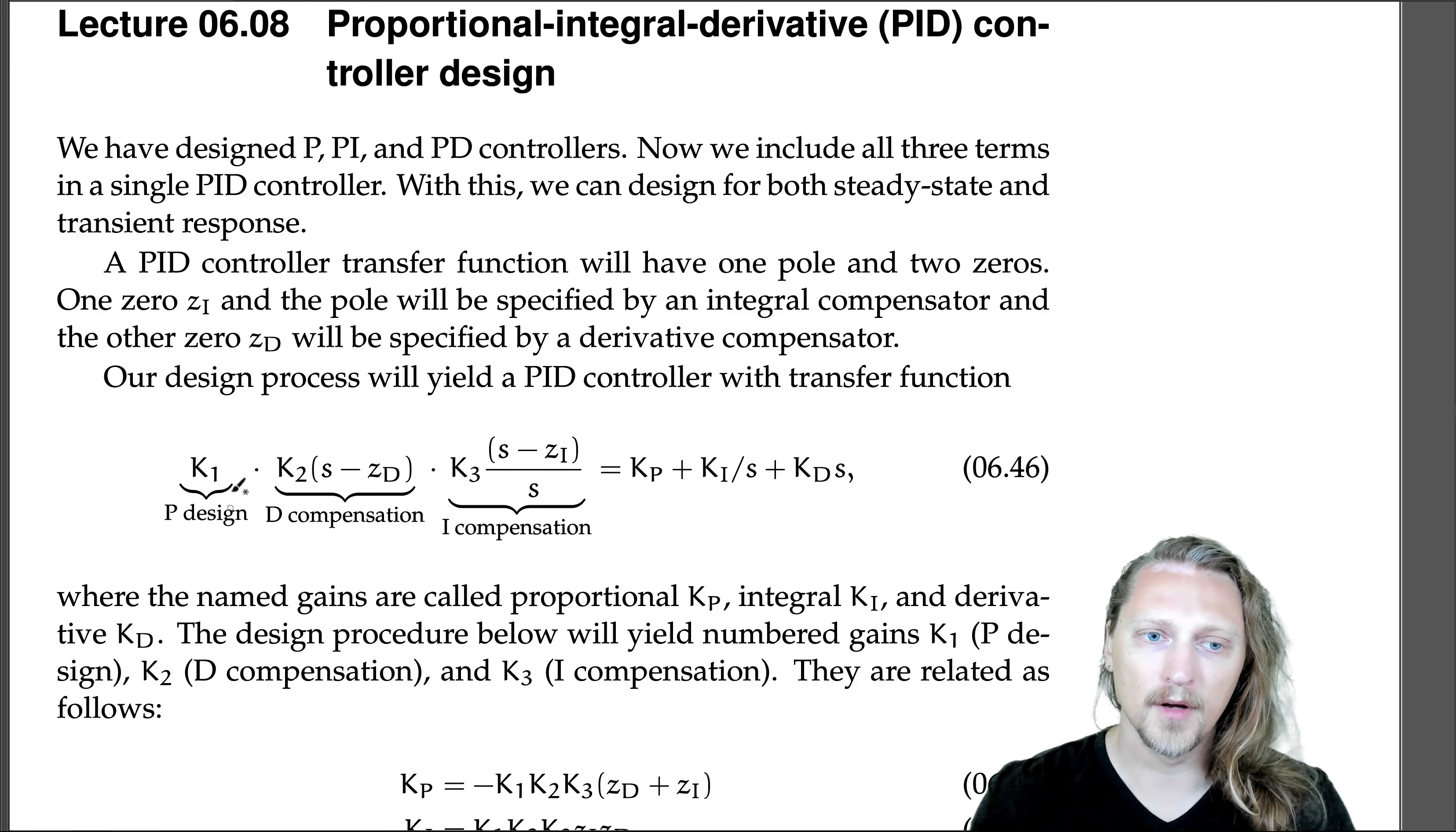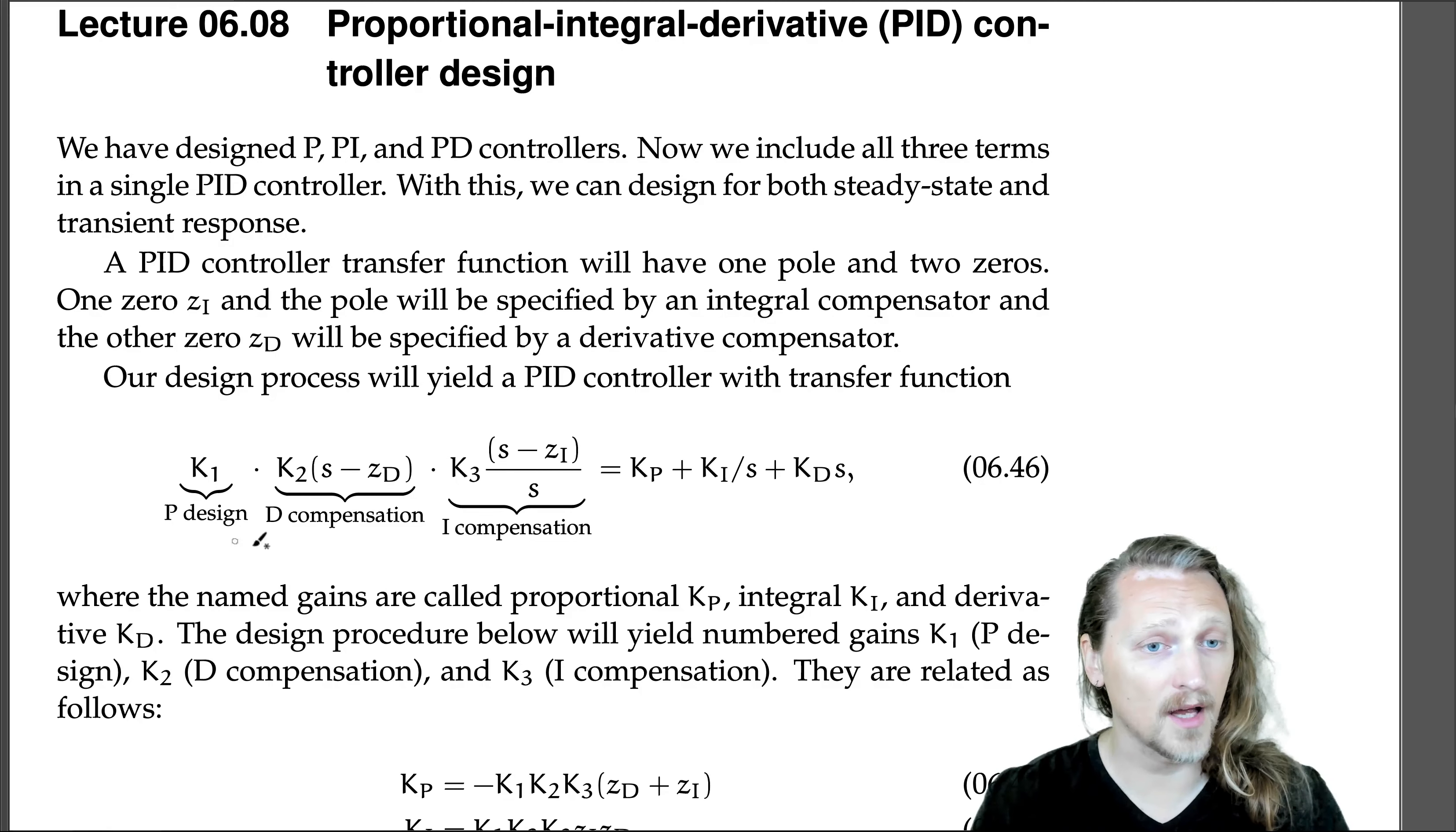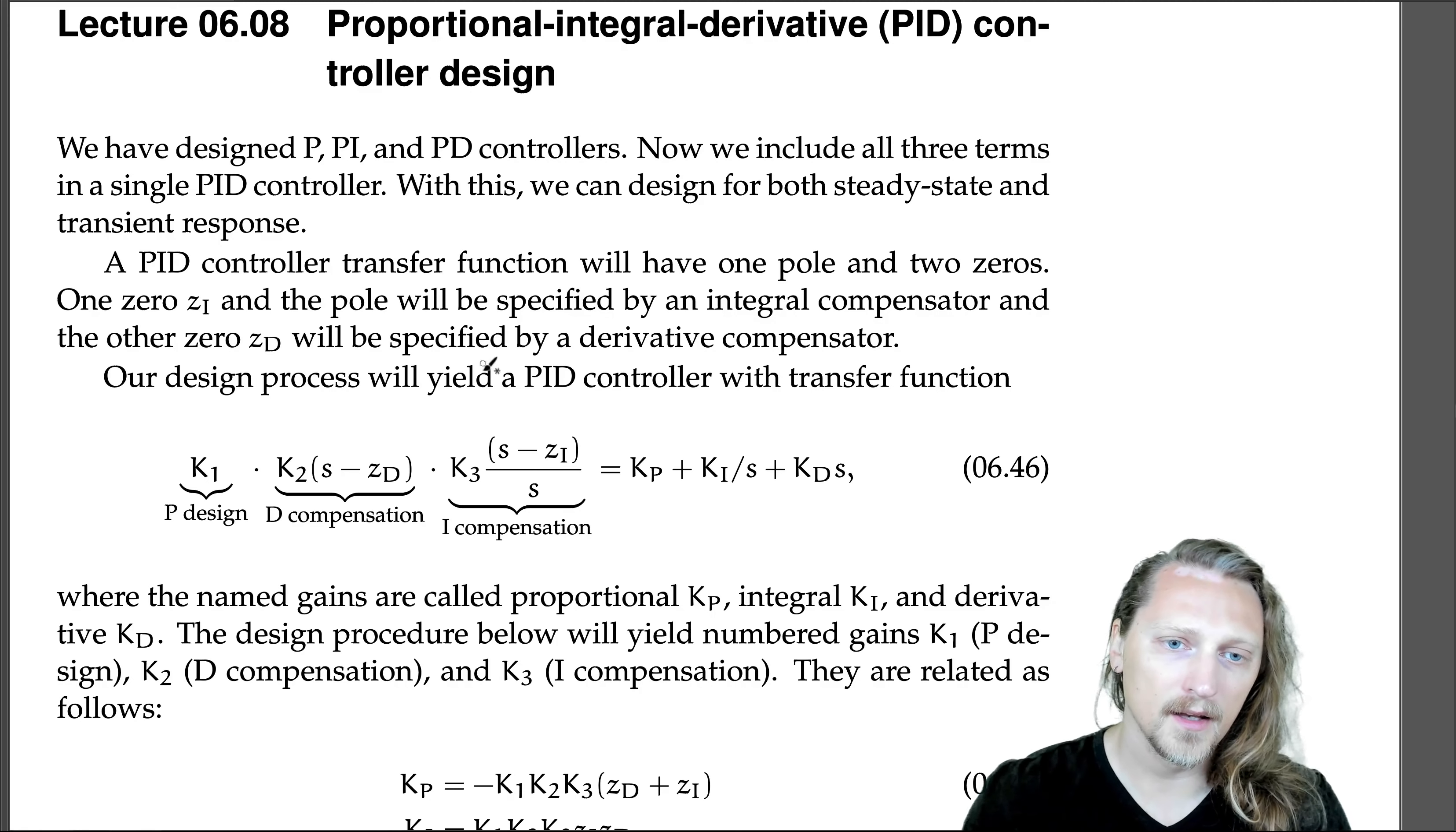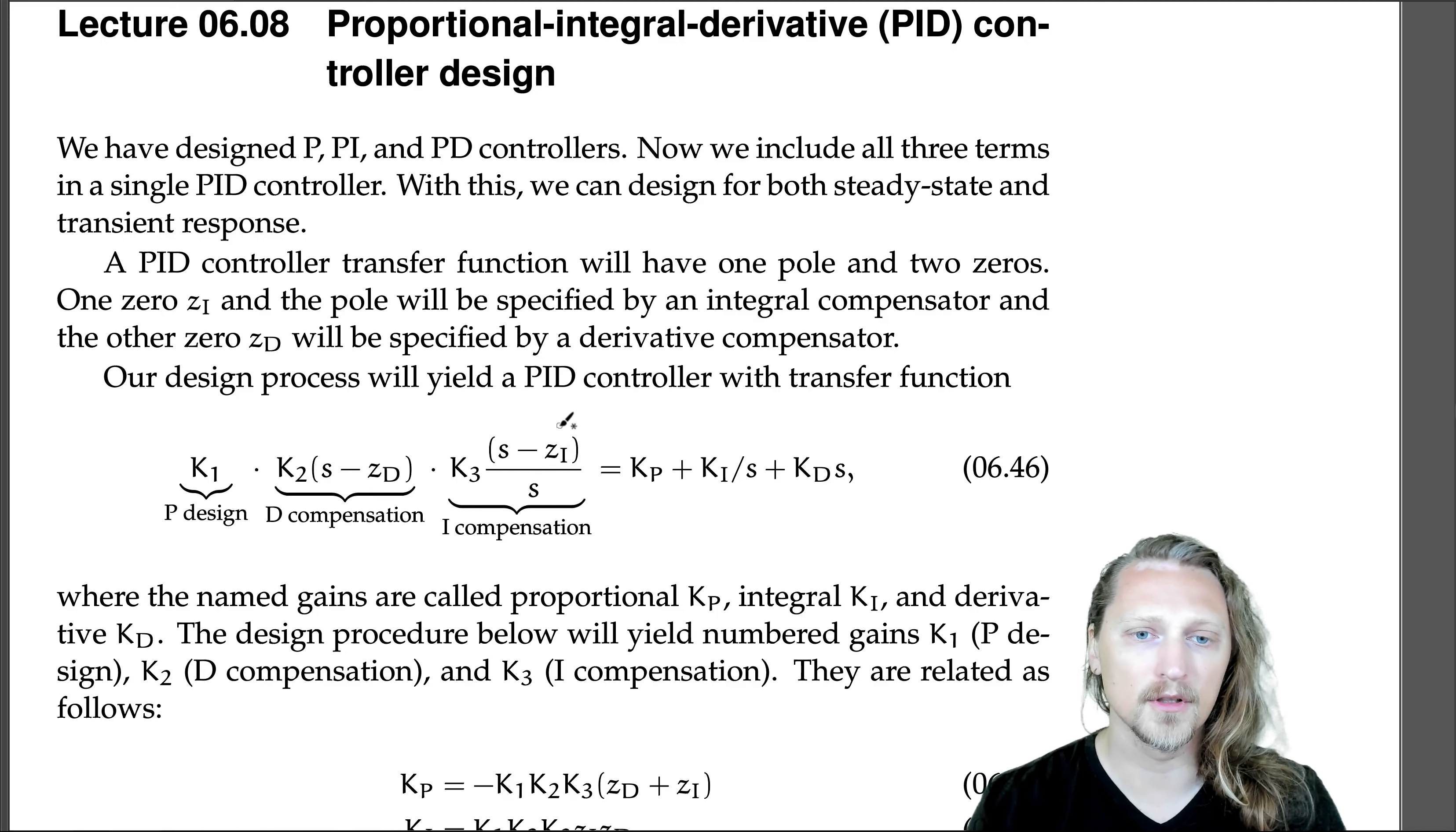a gain for the proportional controller design, a gain k2 and a zero location zd that comes from the derivative compensator, and a gain k3 and another zero location that comes from the integral compensator.